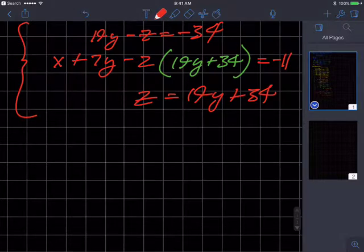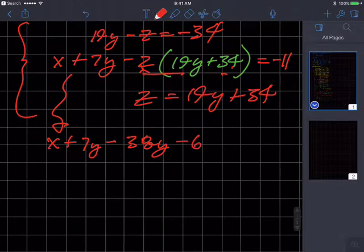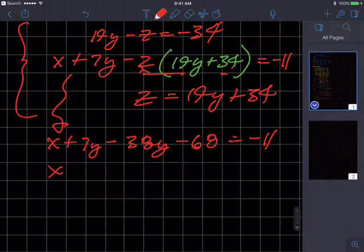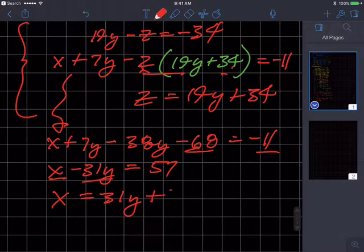And so let's fiddle with the middle equation. So it's going to be x plus 7y minus, multiply those is 38y. Multiply this, the negative 2 and the 34, and I get negative 68 equals negative 11. Combine like terms. I get x minus 31y. Add 68 to both sides equals 57. And now I'm going to solve for x. If you didn't watch the other video, you'll see what I'm doing. Add 31y to both sides equals 31y plus 57.